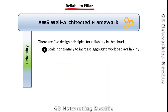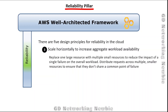Scale horizontally to increase aggregate workload availability suggests replacing one large resource with multiple smaller resources to reduce the impact of a single failure on the overall workload. Instead of relying on one large resource that could take the system down if it fails, we distribute requests across multiple smaller resources to ensure there is no single point of failure.